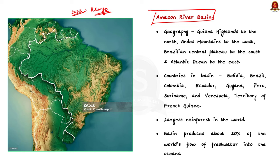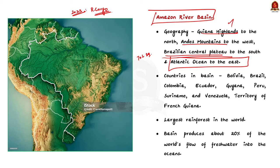The Amazon Basin is a part of South America drained by the Amazon River and its tributaries. Geographically it is bounded by the Guiana Highlands to the north, the Andes Mountains to the west, the Brazilian Central Plateau to the south, and the Atlantic Ocean to the east. It covers an area of about 70 lakh square kilometers, or about 35.5% of the entire South American continent. The major countries in the basin include Bolivia, Brazil, Colombia, Ecuador, Guiana, Peru, Suriname, Venezuela and French Guiana.